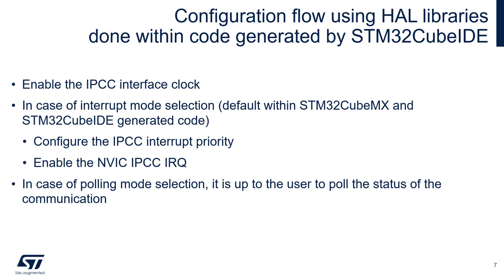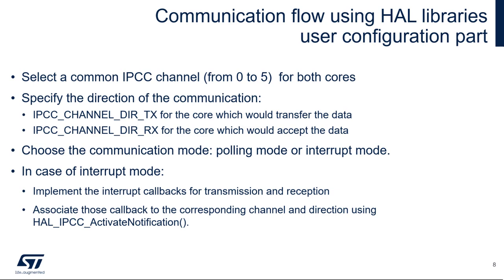Configuration flow using HAL libraries is done with code generated by STM32CubeMX or STM32CubeIDE. To activate and use the IPCC controller, it is necessary to enable the IPCC interface clock. In the case of interrupt mode selection — which is the default setting of CubeMX/CubeIDE generated code — we need to configure the IPCC interrupt priority and enable its NVIC channel. In polling mode, it is up to the user to poll the status of the communication. STM32CubeMX and STM32CubeIDE are just enabling the IPCC, its clock, and its interrupt.